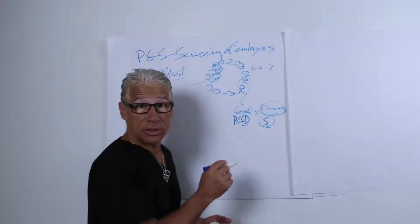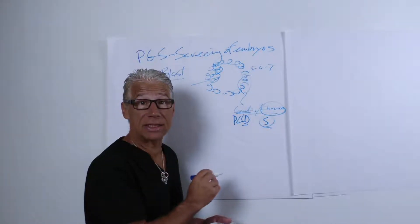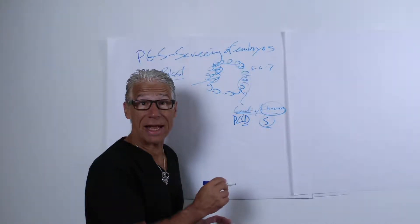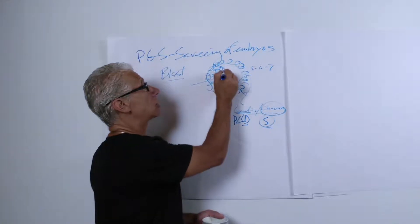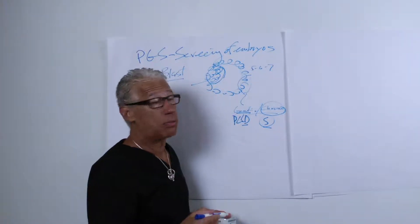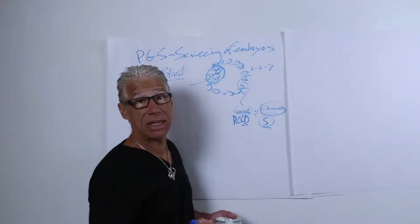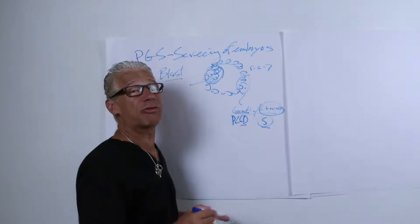One of the problems is this isn't 100% accurate, so there's something called mosaicism, and it may be incorrect. The actual fetus may be actually normal where the placental components of the blastocyst may be abnormal. So we have to be very careful.